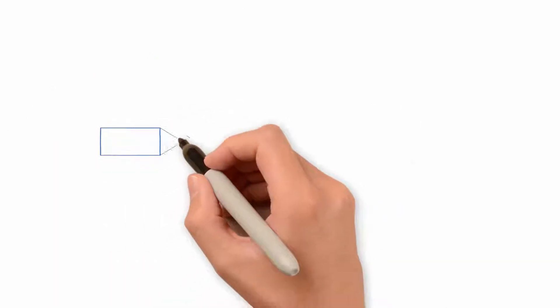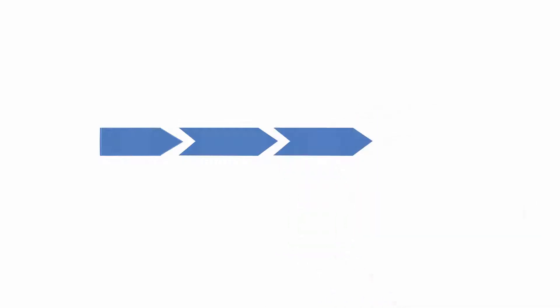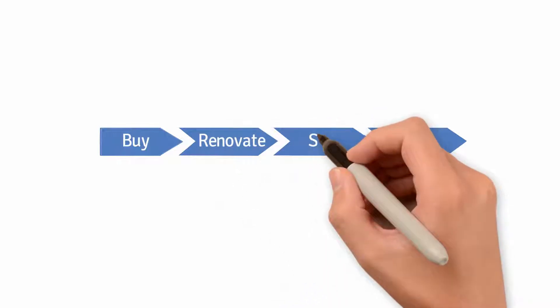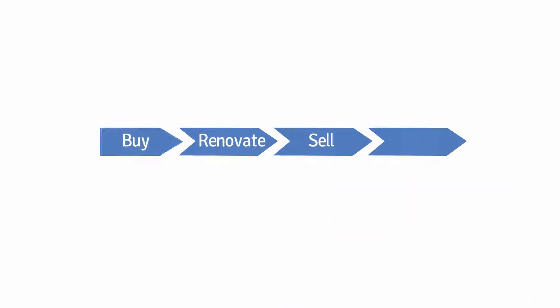Consider this. The old flip home process is a straight line. Find and buy a broken home. Plan and renovate the broken home. Put the renovated home on the market to sell, while the property sits. You hemorrhage admin costs and fees. Close and cash out.